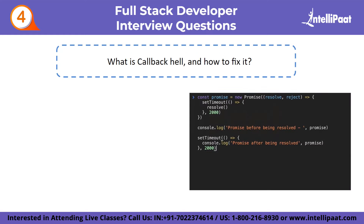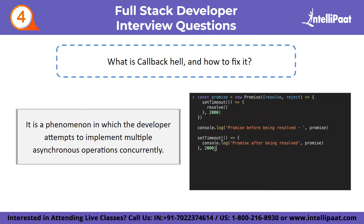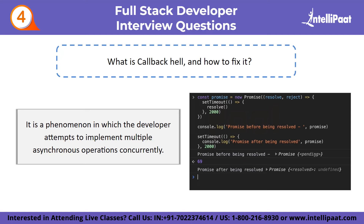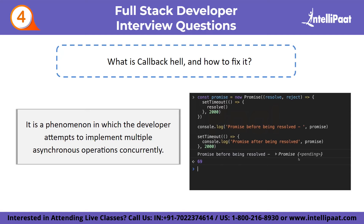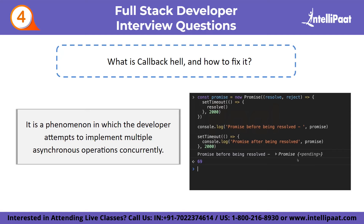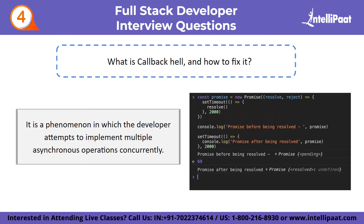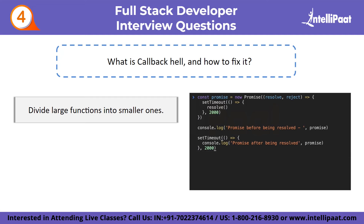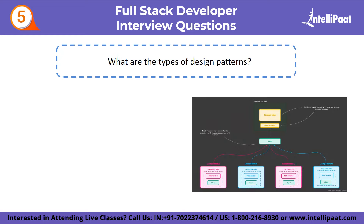Fourth advanced question: what is callback hell and how to fix it? Callback hell is a JavaScript phenomenon in which the developer attempts to implement multiple asynchronous operations concurrently, resulting in the nesting of callback functions that produces difficult-to-read, error-prone, and difficult-to-manage code. We can resolve it by employing the following methods: first, dividing large functions into smaller ones; then, use promises; and finally, use async/await.